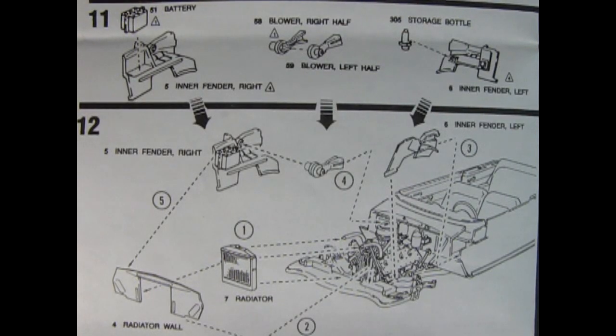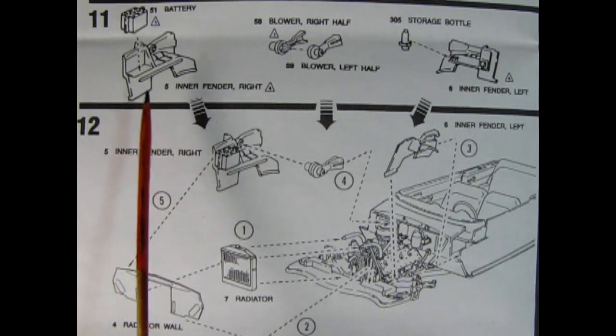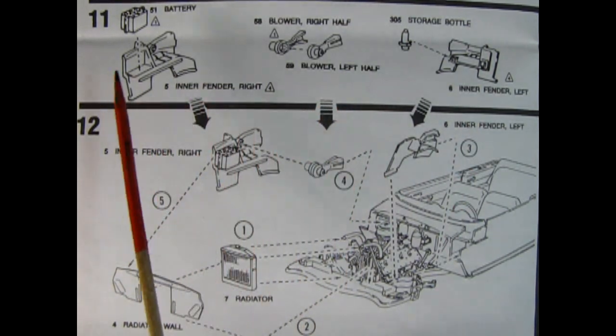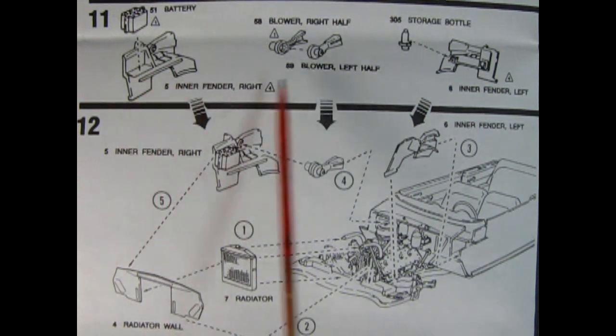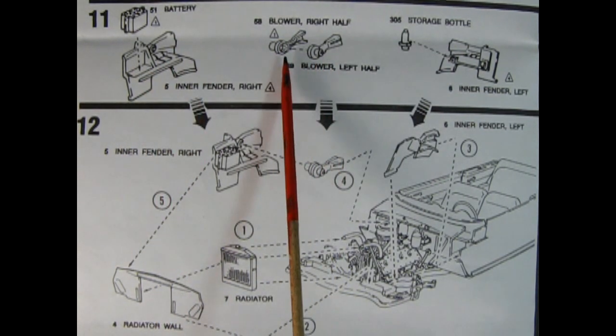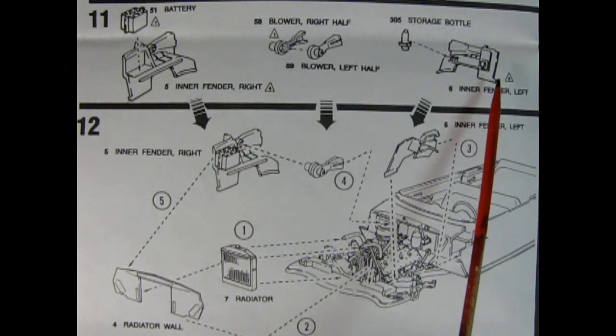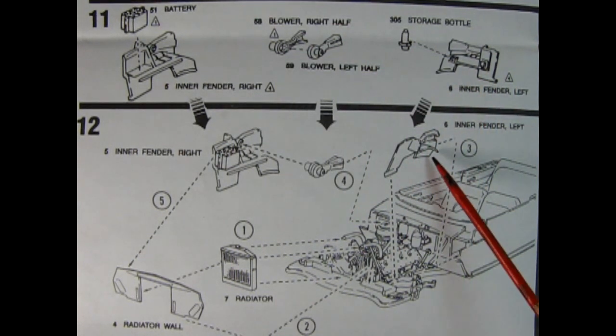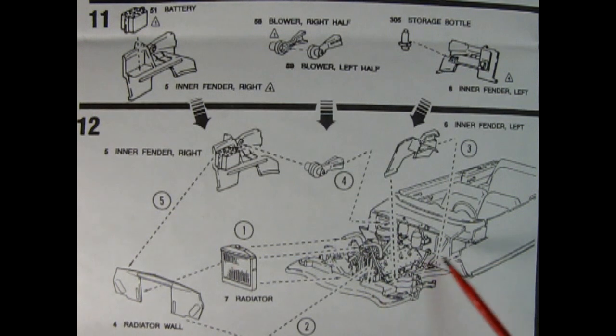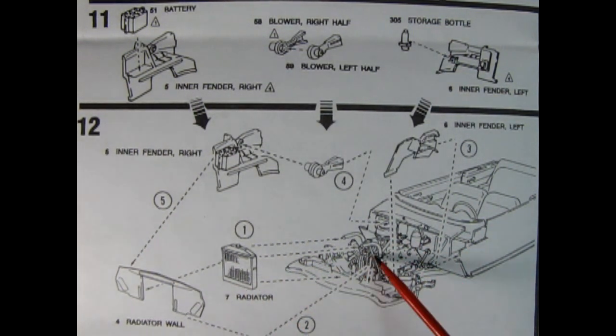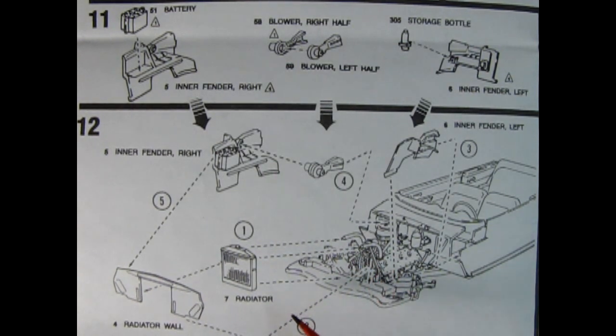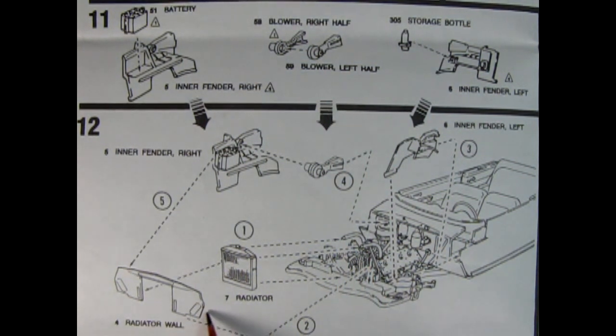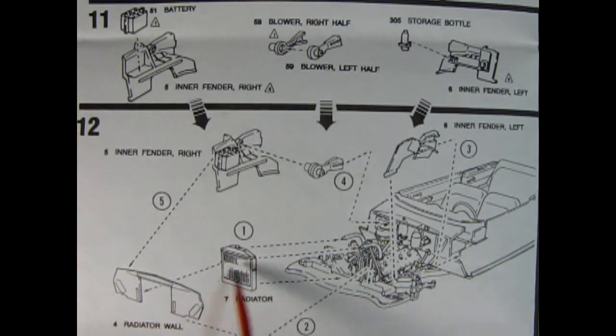Panel 11 shows a bunch of our inner fender well details like our battery which glues to the inner front fender, our blower halves left and right, and our storage bottle and inner fender on the left. Now all of these panels here drop onto our frame and onto our interior on that firewall and then our radiator will click into place on all four of these radiator hoses. So make sure your alignment is really good. And then look we've got our radiator wall separate so that will glue into the radiator. This is a really advanced kit.